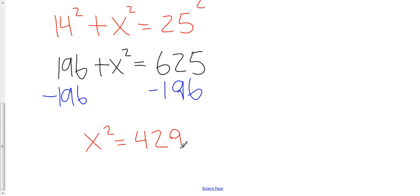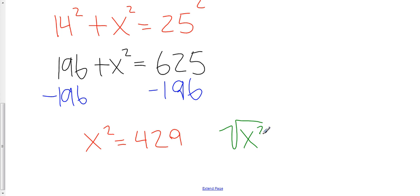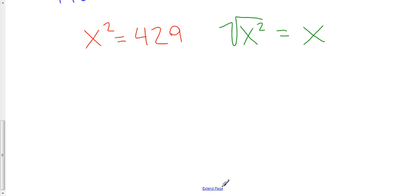When solving equations we use opposite operations to eliminate what's being done to x. Right now x is being multiplied by itself, so the opposite of squaring is the square root. We're going to take the square root of both sides. The square root of x squared is simply x, so x equals the square root of 429.